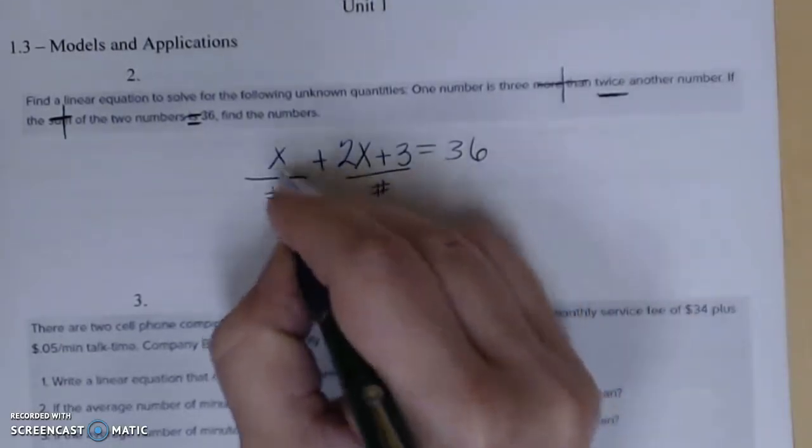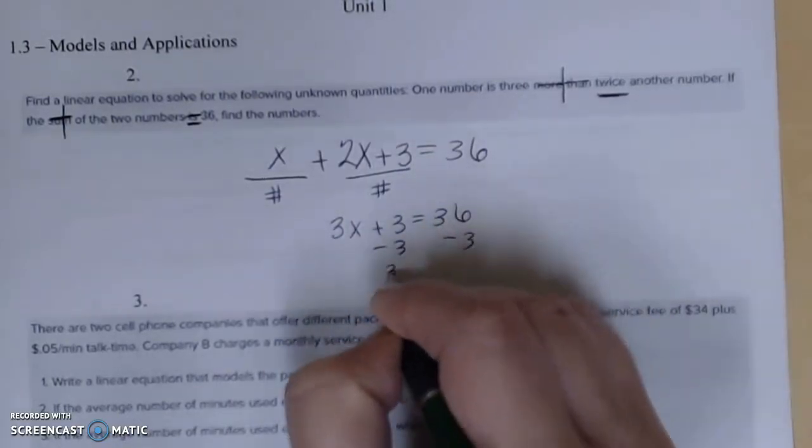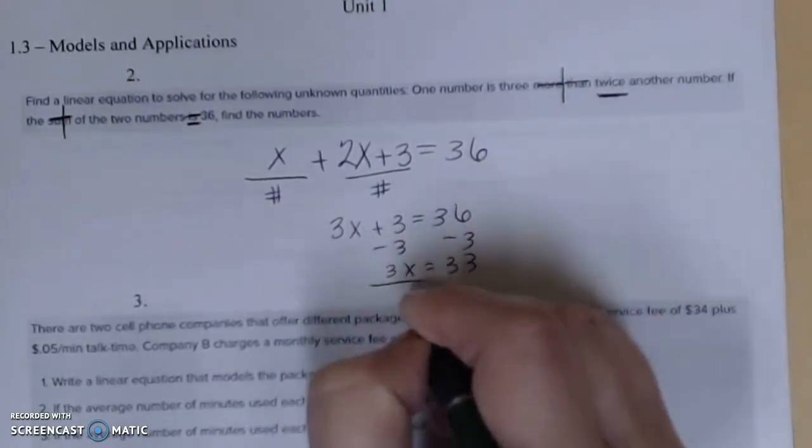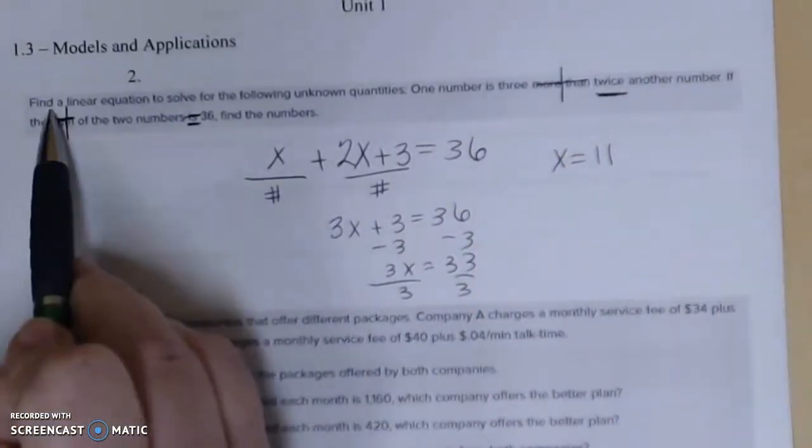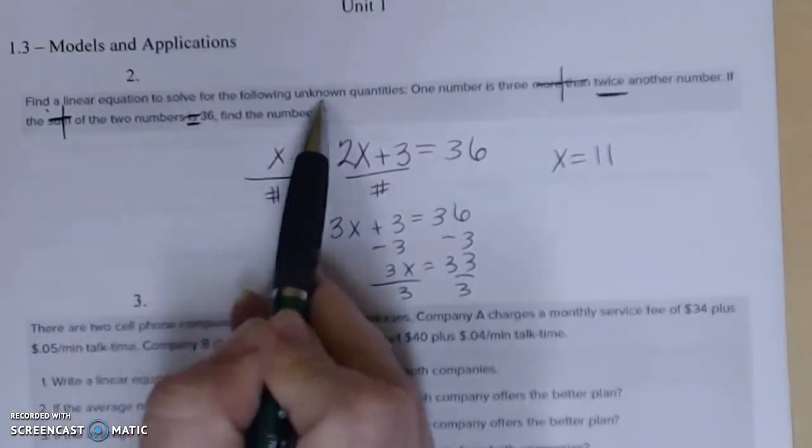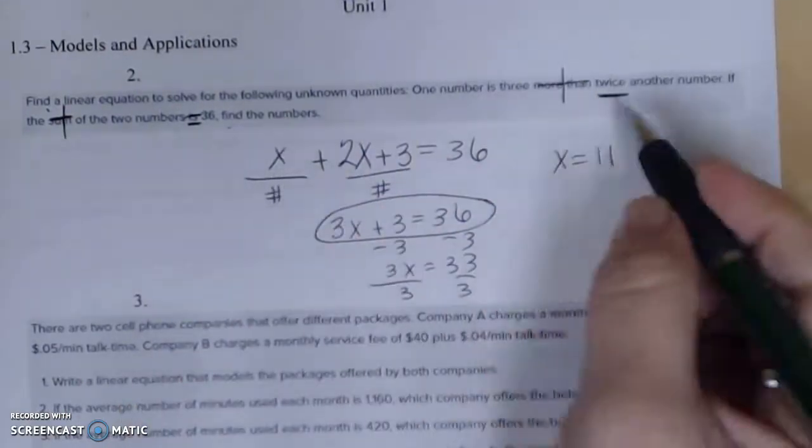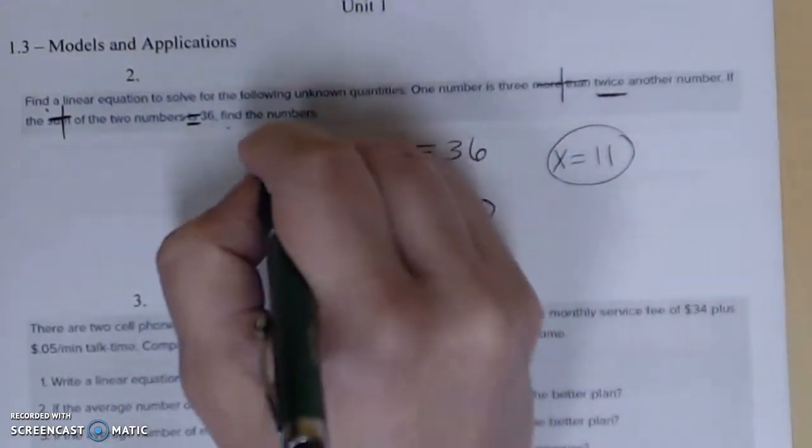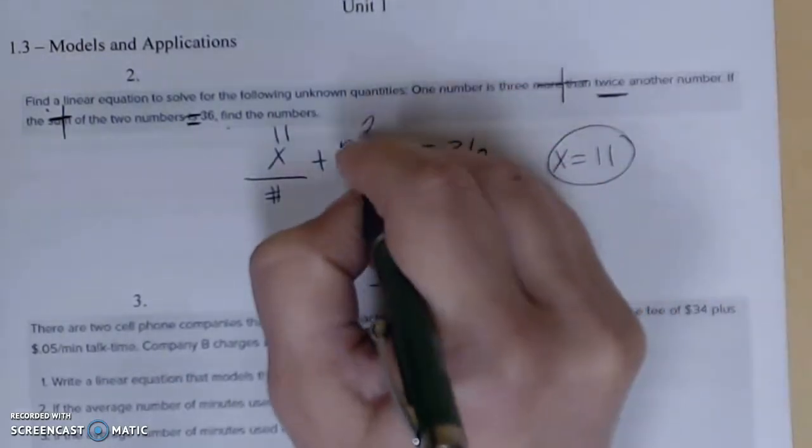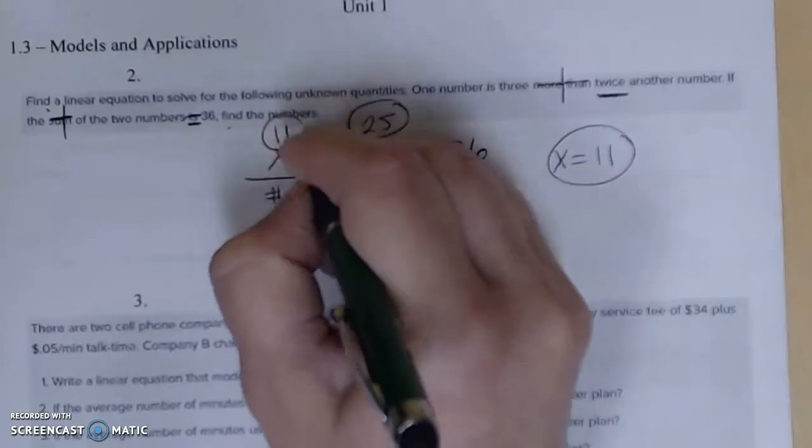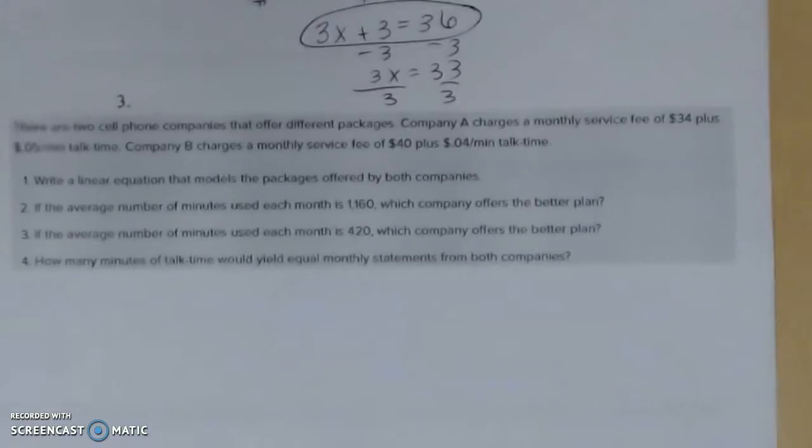Now I'm going to combine my terms. 2x and x gives me 3x plus 3 equal to 36. And I'm going to solve accordingly. So this gives me x to be 11. So again find a linear equation to solve the following unknown quantities. There's my linear equation. Find the numbers. So x to be 11, that's my first number. If I plug 11 back into 2x plus 3 this gives me 25. So I have found my numbers and my linear equation.